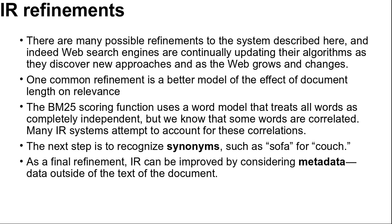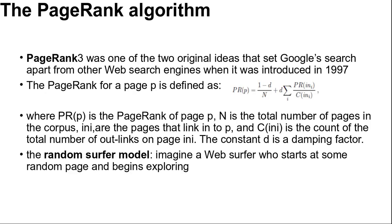As a final refinement, IR can be improved by considering metadata — data outside of the text of the document. Examples include human-supplied keywords and publication data. On the web, hypertext links between documents are a crucial source of information. This completes the discussion of IR refinement.